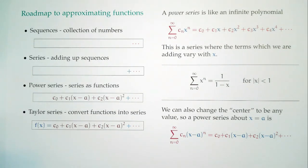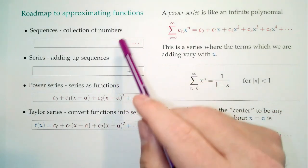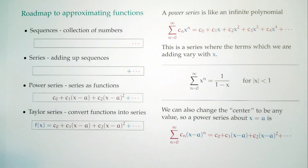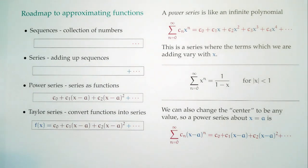So it's time to take a moment and see where we're at. We said a few classes back that we're on this roadmap. We spent one day talking about sequences, which is sort of a long list of numbers. Oftentimes when we talk about sequences, the big question is what can we say about the end of the list? In other words, what happens to the values of the numbers at the end of that list?